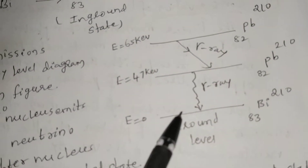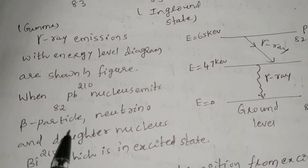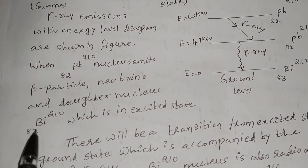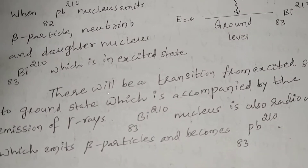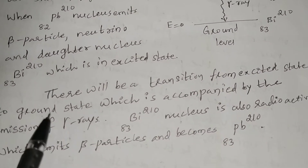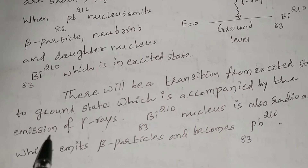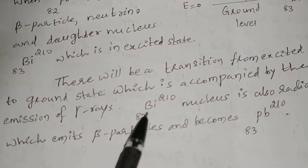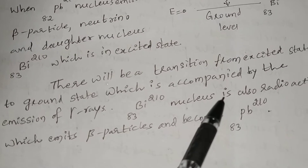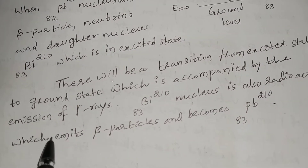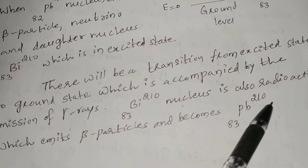When Lead-82-210 nucleus emits a beta particle, neutron, and daughter nucleus, which is in an excited state, there will be a transition from excited state to ground state, accompanied by the emission of gamma rays. Bismuth-210, with atomic number 83, is also radioactive, emitting a beta particle and becoming Lead-83-210.